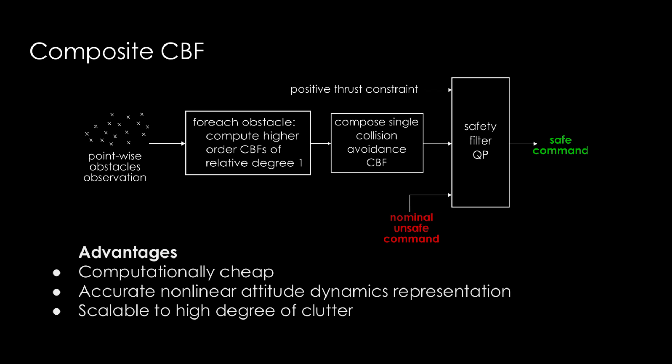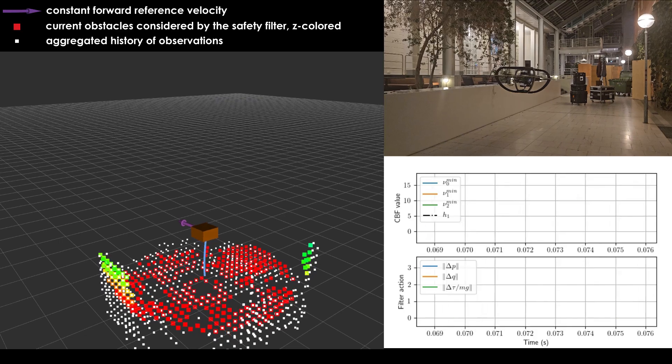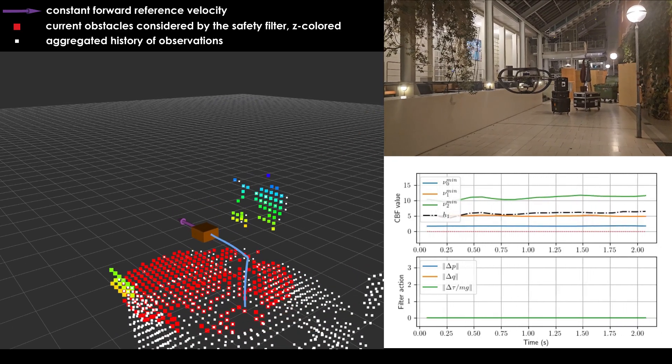We evaluate the resulting safety filter in two hardware experiments. In the first experiment, we test the safety filter with a naive nominal policy. A nominal reference velocity of one meter per second in the x-direction is provided to a reference controller in an obstacle-filled hallway.